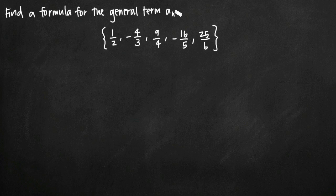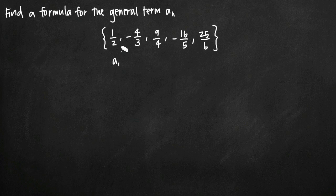Whenever you're asked to do this, the first thing I like to do is write underneath the sequence the specific term that each number represents. This first term here is the a sub one term of the sequence — it is the first term. Negative four-thirds is the second term, so we call this a sub two, then a sub three, a sub four, and a sub five.